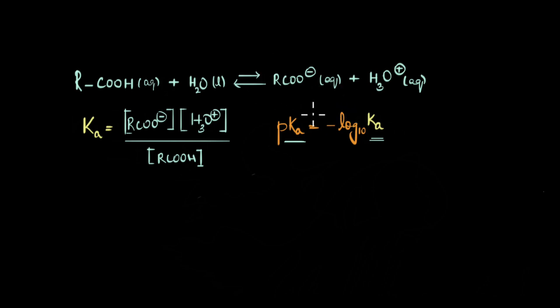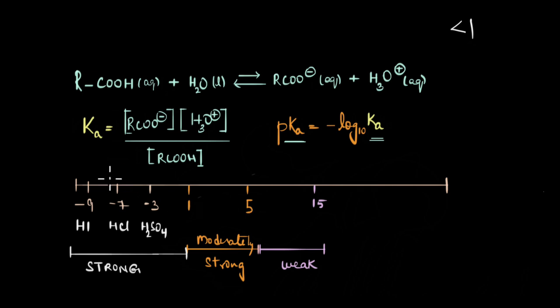Turns out that if we take a look at the pKa values of various acids, strong acids have a pKa of less than 1. For example, if you look at this scale—this is only for representation, it's not to scale—the pKa of strong acids like HCl, HI and H2SO4 are given here. You can see that they are all less than 1.